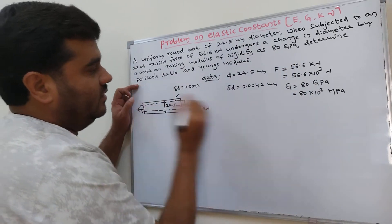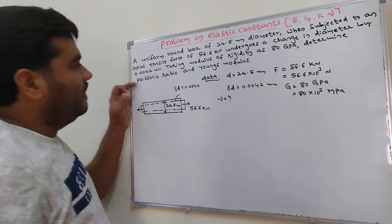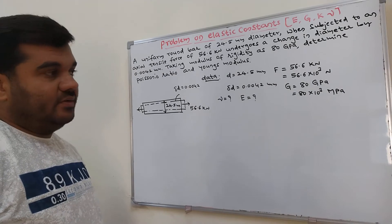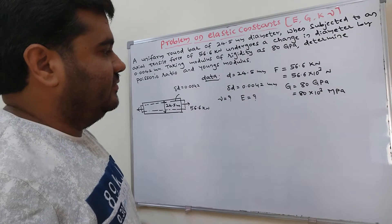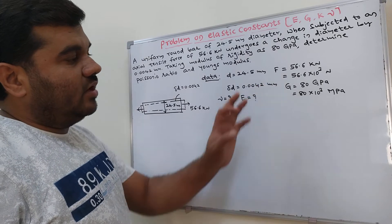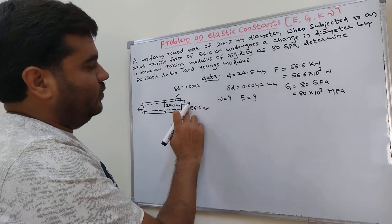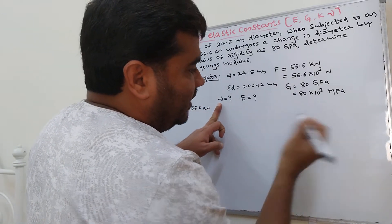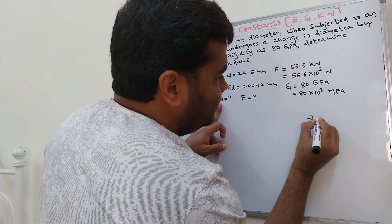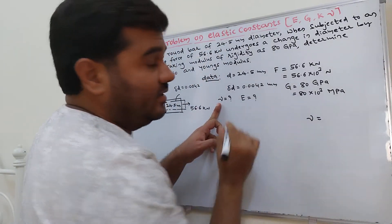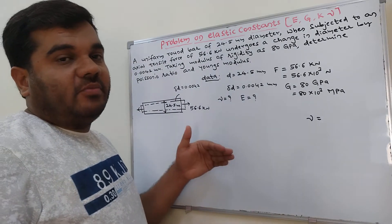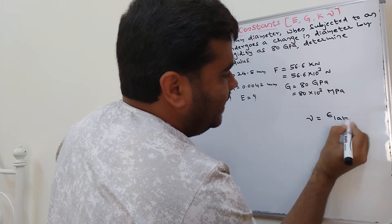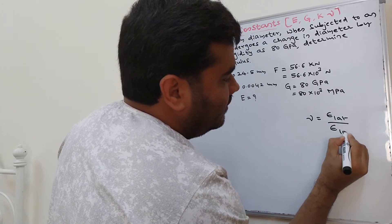We need to determine Poisson's ratio nu and Young's modulus E. This is the problem definition. To find Poisson's ratio, the general formula is: Poisson's ratio nu equals lateral strain divided by longitudinal strain.